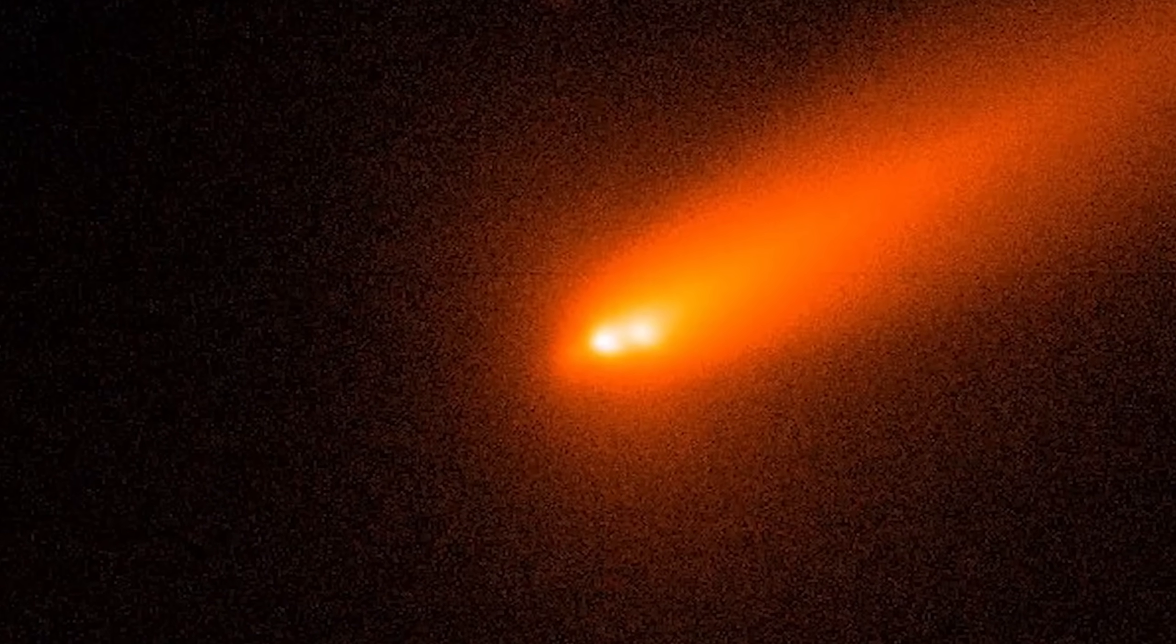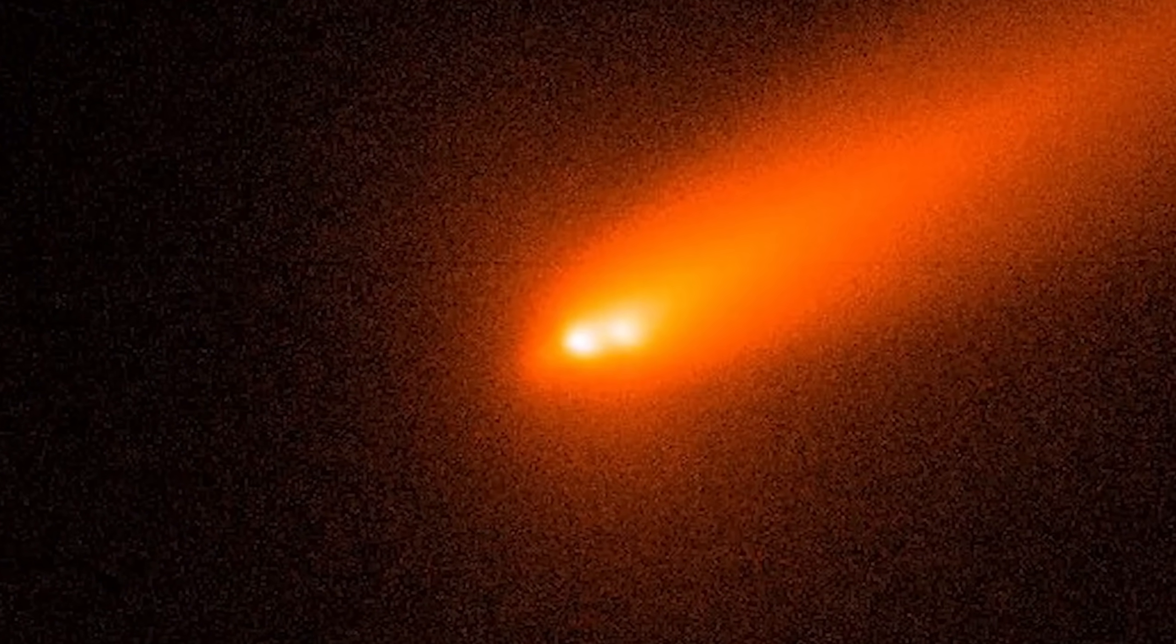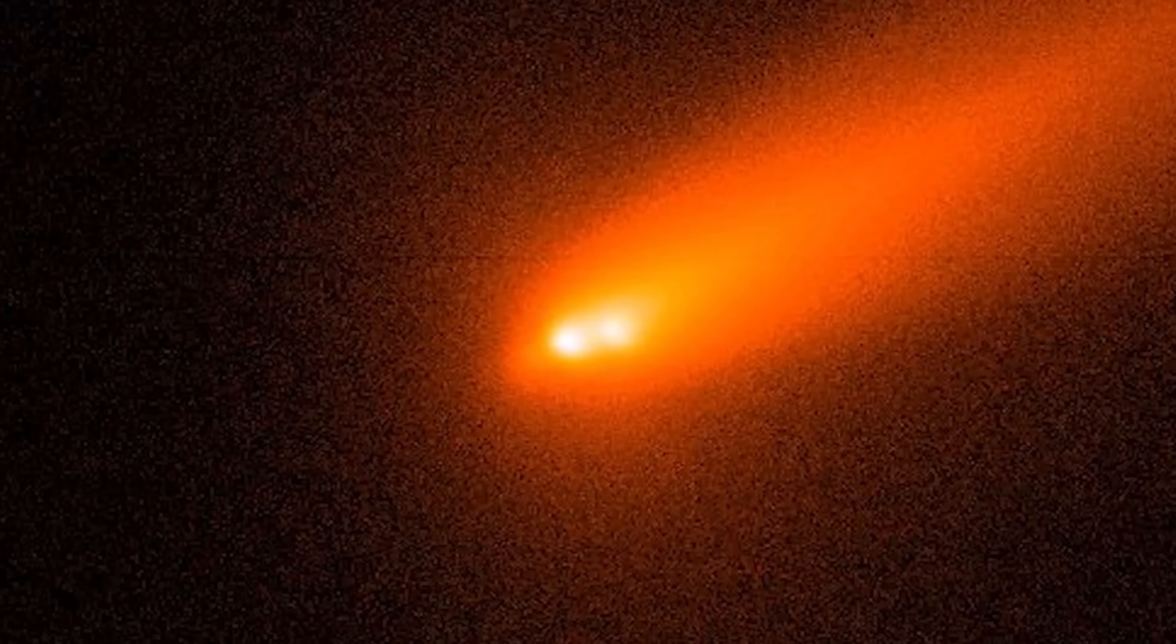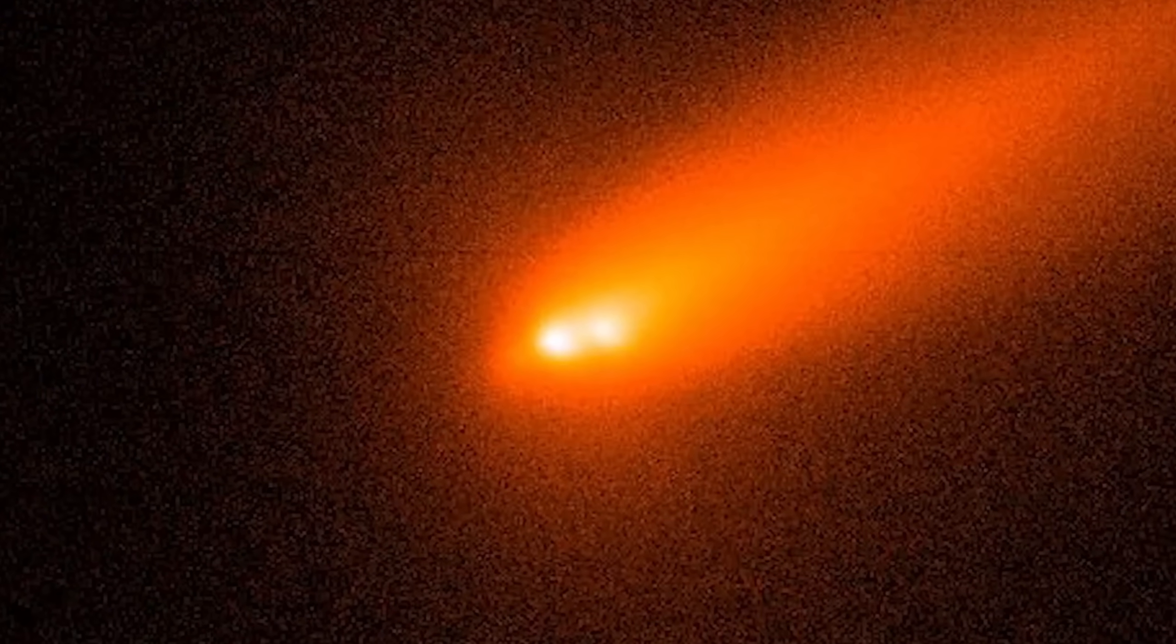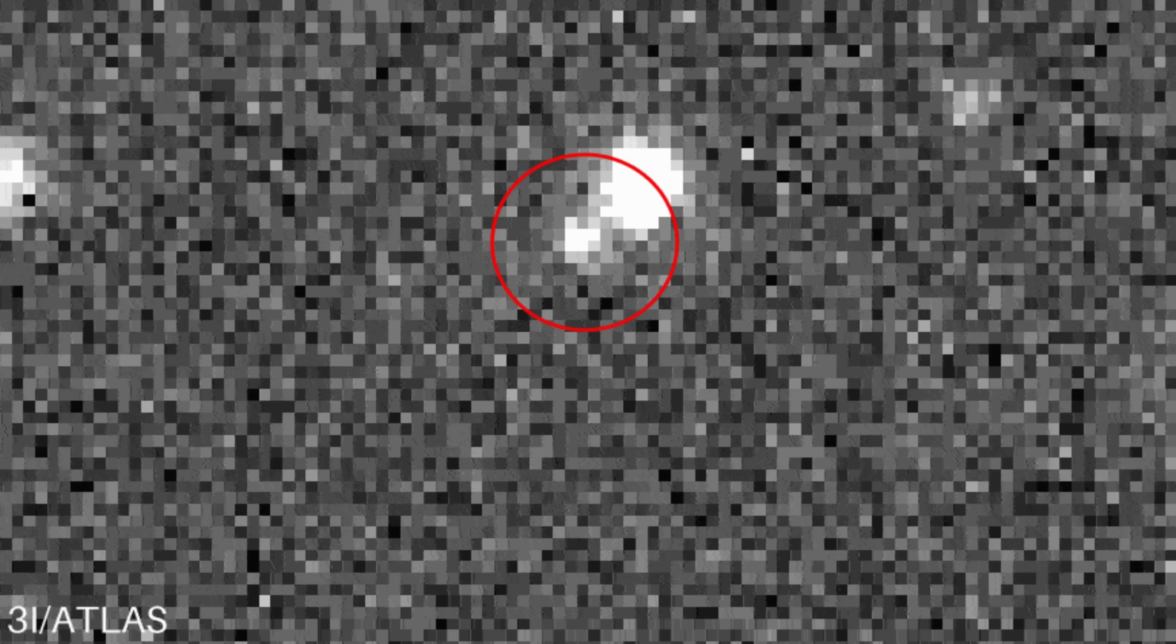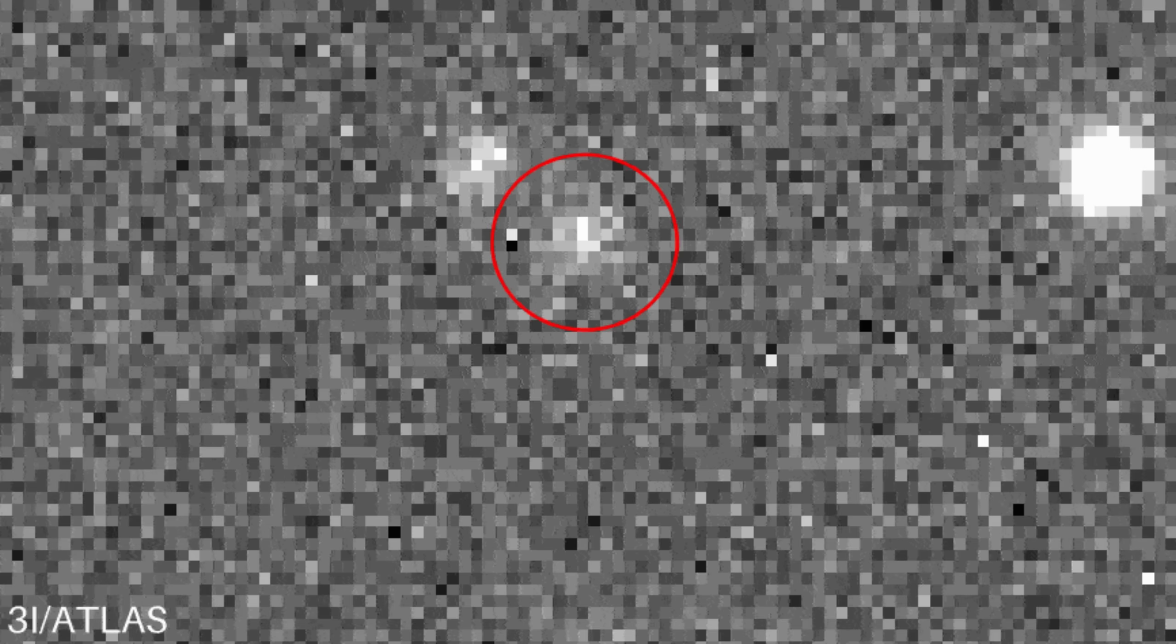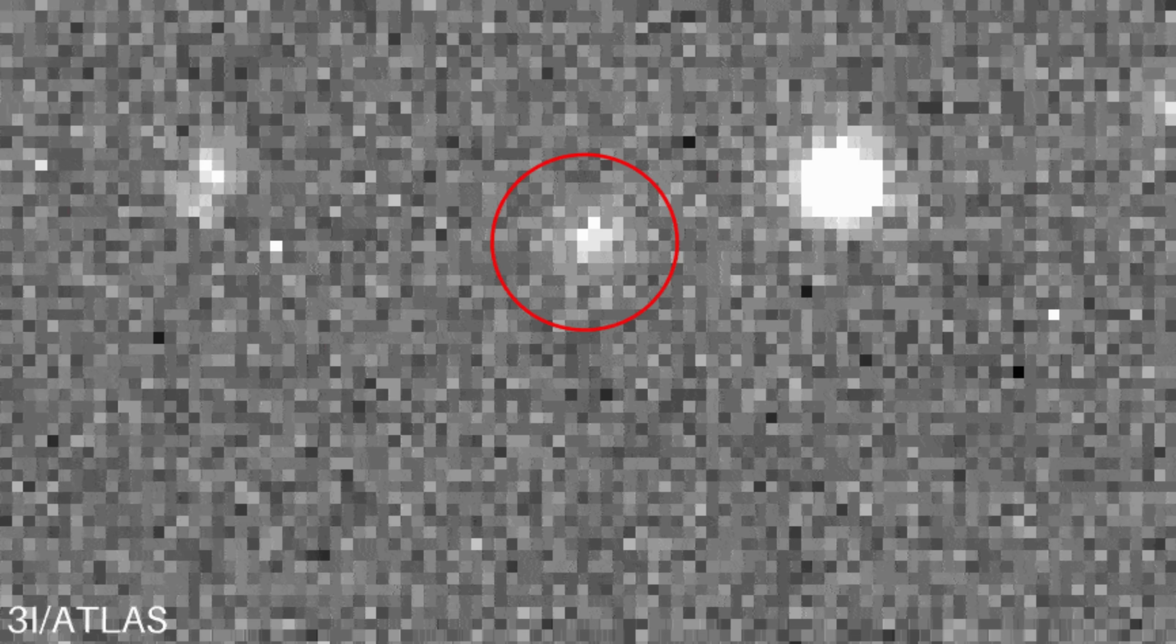The data confirms our worst fears. The Manhattan-sized object is no longer a scientific curiosity. It's an incoming threat, and the scientists who discovered its new path are now terrified. The object that broke the rules in the vast silent theater of space, a new actor took the stage. It was first spotted by the Asteroid Terrestrial Impact Last Alert System, or ATLAS, in Hawaii.